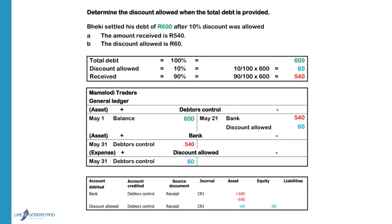Now we determine the discount allowed when the total debt is provided. Becky settled his debt of R600 after 10% discount was allowed. The total debt is 100%, discount is 10%, so the amount that we will receive will be 90%. Since the total debt is given, 100% of his debt equals R600. To calculate the discount: 10 divided by 100 times 600 gives R60. The amount received is 600 times 90% equals R540. The debtor's account will be decreased on the credit side with R540 paid and the discount of R60.